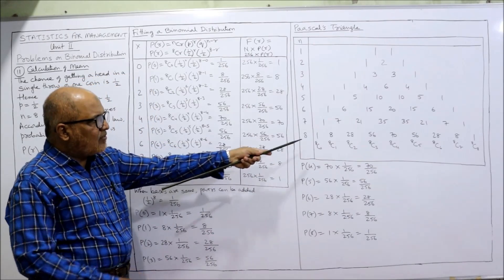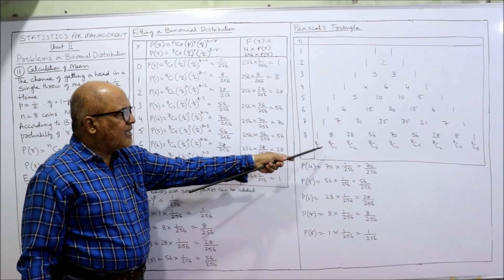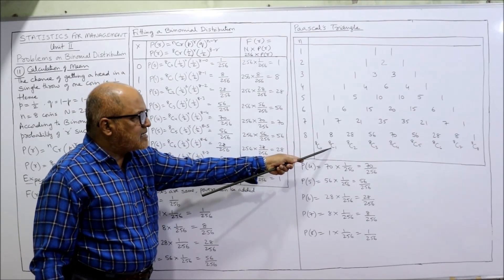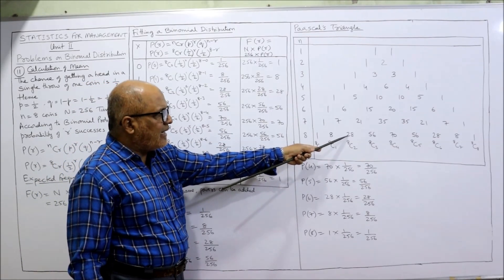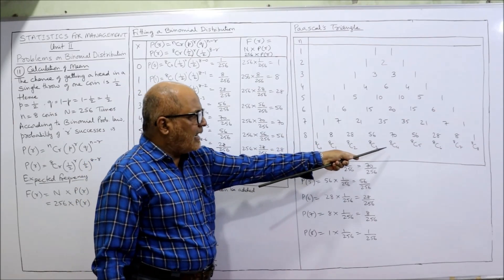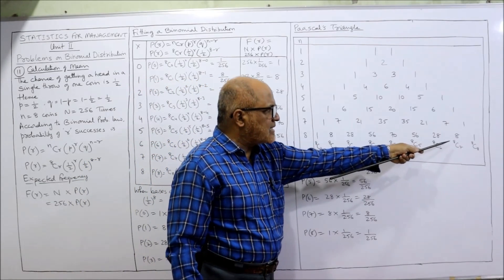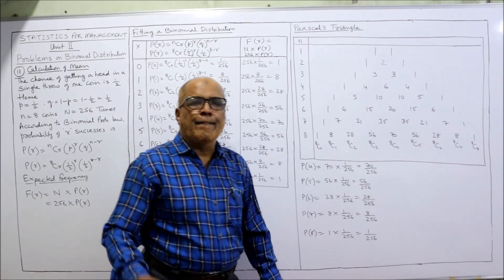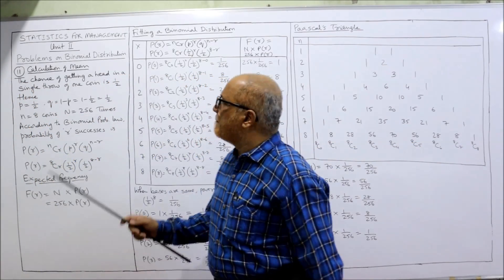The first value 1 is 8C0, the second value 8 is 8C1, the third value 28 is 8C2, then 8C3 = 56, 8C4 = 70, 8C5 = 56, 8C6 = 28, 8C7 = 8, 8C8 = 1. All the nCr values are now obtained.